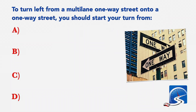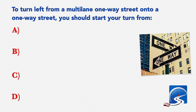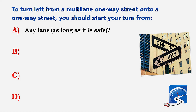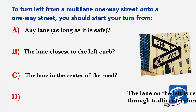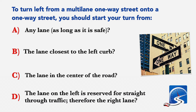To turn left from a multi-lane one-way street onto a one-way street, you should start your turn from: A: Any lane, as long as it's safe. B: The lane closest to the left curb. C: The lane in the center of the road. D: The left lane is reserved for straight-through traffic, therefore the right lane. Correct answer B: The lane closest to the left curb.